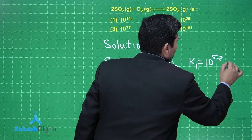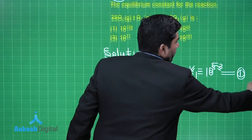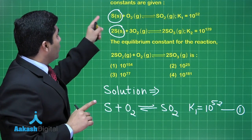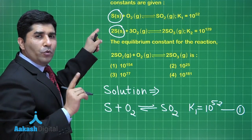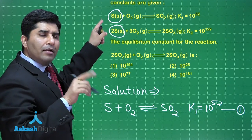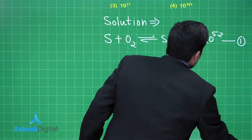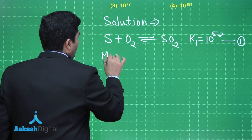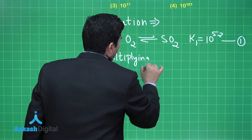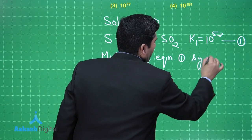To eliminate sulfur, we note that the stoichiometric coefficient of sulfur is 1 in equation 1 and 2 in equation 2. So we reverse equation 1 and multiply by 2, then add to get the desired equation. Multiplying equation 1 by 2 and reversing gives: 2SO₂ in equilibrium with 2S plus 2O₂.